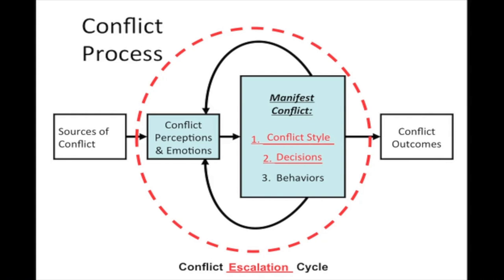Sometimes when things spiral out of control they lead to negative conflict outcomes. If we're able to use an appropriate conflict style — maybe yielding, maybe agreeing to mow the yard and go to the farmer's market — we can prevent negative conflict outcomes. Maybe we decide to say nothing in the face of the other party's demands, engage in appropriate smiling and head-nodding, and keep things civil. This particular approach to manifest conflict can help de-accelerate the conflict escalation cycle.